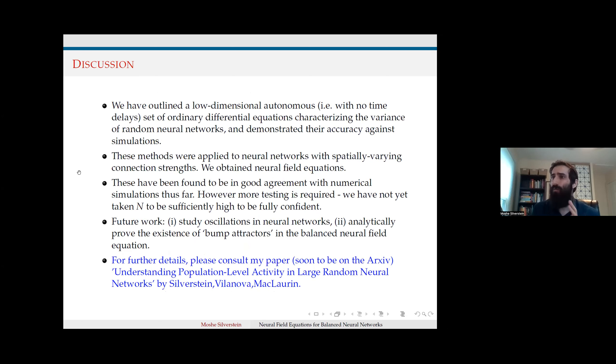I've presented an outline of our work which represents a low-dimensional autonomous set of ordinary differential equations characterizing the variance in random neural networks. Our initial numerics demonstrate they are fairly consistent. The simplicity of this model allows us to work in both spatially homogeneous and easily extend to spatially heterogeneous cases. The model seems fairly consistent at our initial glance, though obviously much more numeric testing needs to be done. Some numerics presented today were produced very recently.